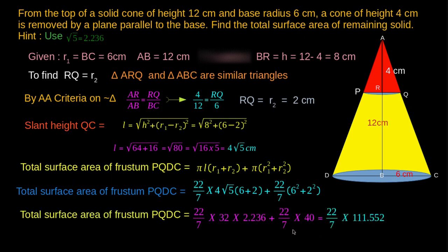On simplification, we get the value of TSA of the frustum as 350.592 cm squared.